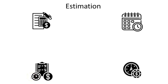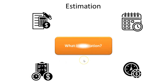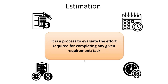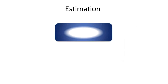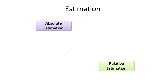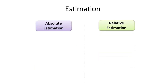Hello friends, welcome back. Hope you are doing well and are ready for the next session in this Agile and Scrum series. Let us start with defining Estimation. What is Estimation? It is the process to evaluate the effort required for completing any given task. To estimate, there are two ways: Absolute Estimation and Relative Estimation.